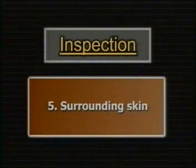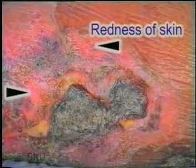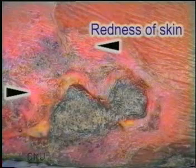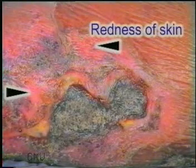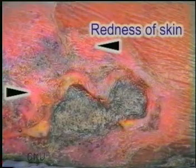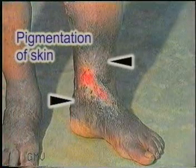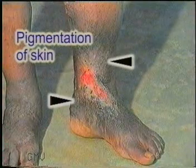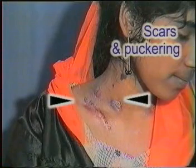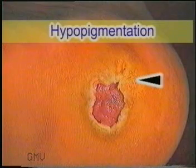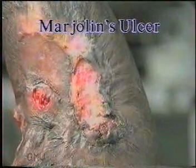Lastly, inspect the surrounding area. If the ulcer is spreading and infected, the surrounding skin is shiny, red, and edematous due to cellulitis. Dark pigmentation and eczema surrounding the ulcer are typical of varicose ulcers. Multiple scars and puckering of the skin surrounding an ulcer in the neck are suggestive of tuberculous ulcers. Hypopigmentation of surrounding skin is common in non-healing ulcers. An ulcer within a large scar suggests the possibility of a Marjolin's ulcer — note the extensive scars of burns which the patient had suffered from in childhood, 30 years back.